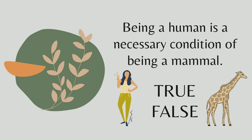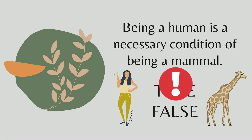Next: Being a human is a necessary condition of being a mammal. Is this true or false? It is also false. Being human is not required to be a mammal, because animals are also mammals — animals do not need to be human to be called mammals.